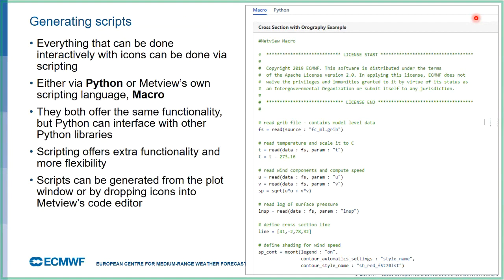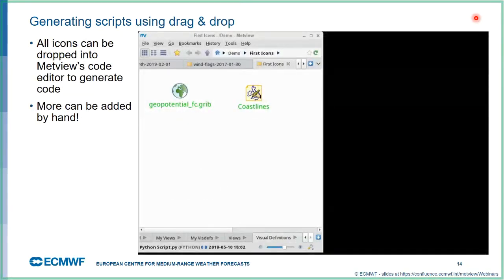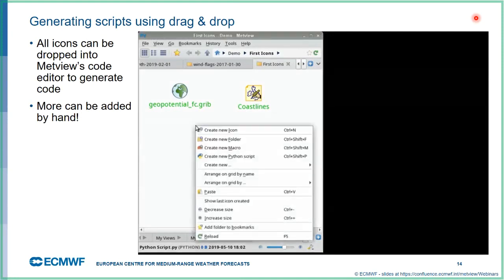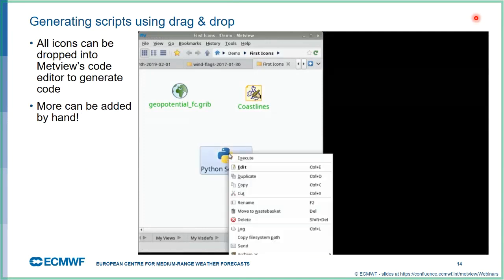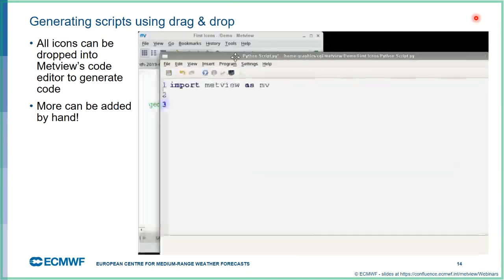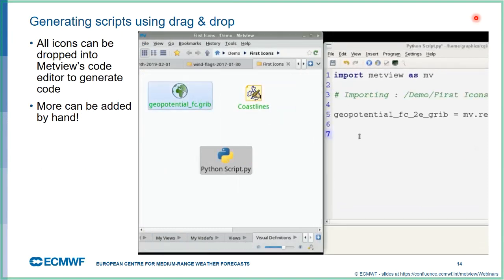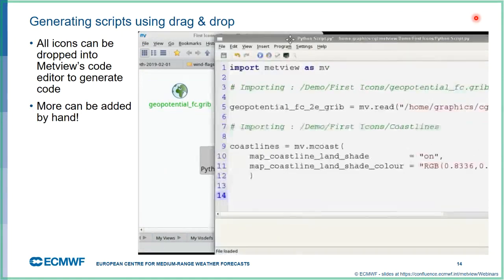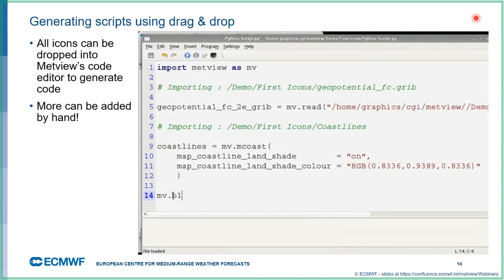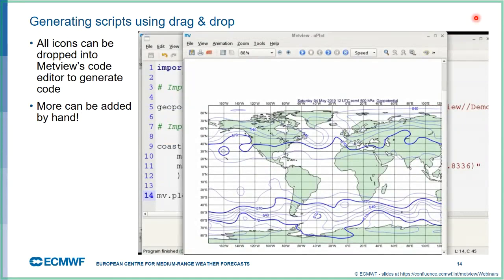There's a direct relationship between icons and scripts. If you have something generated with icons, you can quickly make a script from it. We create a new Python script — Metview helpfully puts the import statement at the start. We drop our GRIB icon and coastlines icon in, and the code editor generates the relevant Python code. We add a plot command, plot the coastlines in the background, plot our geopotential GRIB file on top, run that Python script, and we get our plot back. You can add more data to the plot command for multiple data layers.